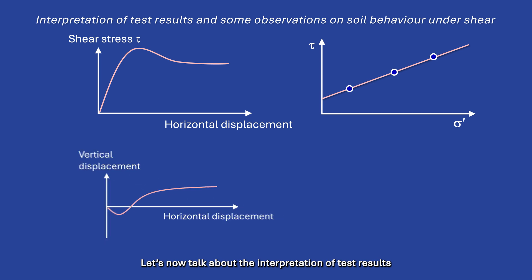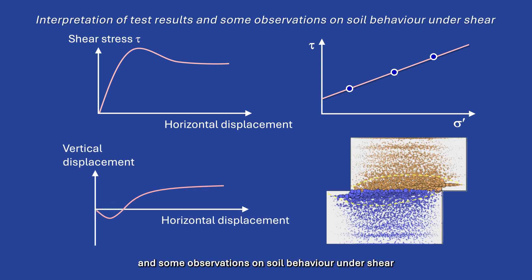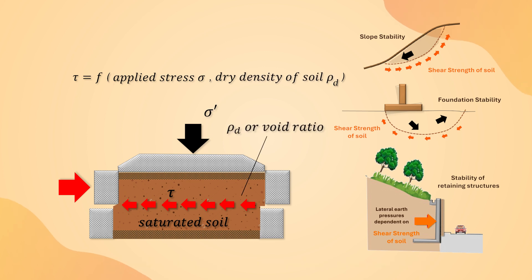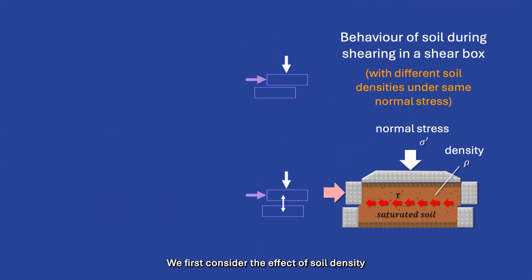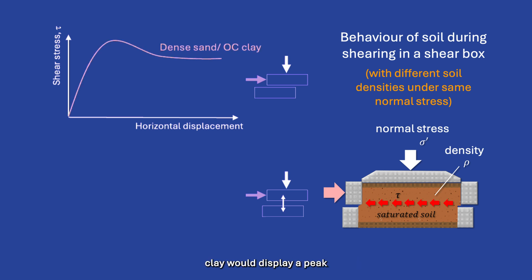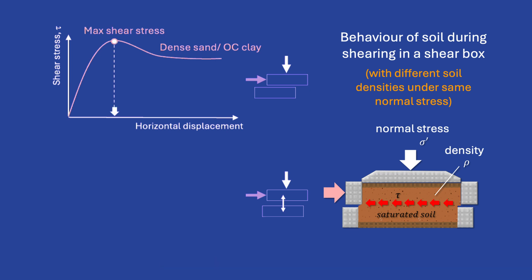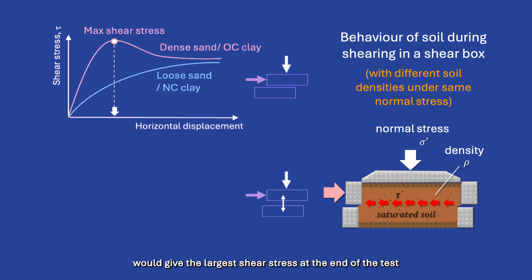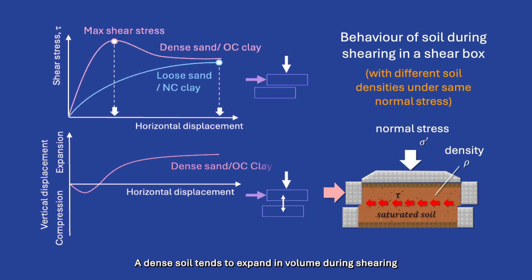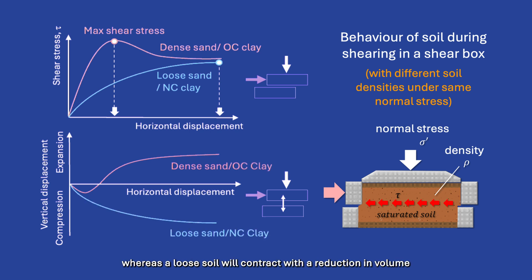Let us now talk about the interpretation of test results and some observations on soil behavior under shear. Two important factors that govern the shear strength of a granular soil are the stress level applied during shearing and the density of the soil. When a soil is sheared under the same normal stress, a dense sand or an overconsolidated clay would display a peak shear stress at a relatively small horizontal displacement. In contrast, a loose sand or a normally consolidated clay would give the largest shear stress at the end of the test at a relatively large horizontal displacement. A dense soil tends to expand in volume during shearing, whereas a loose soil will contract — this volume expansion is called dilation.